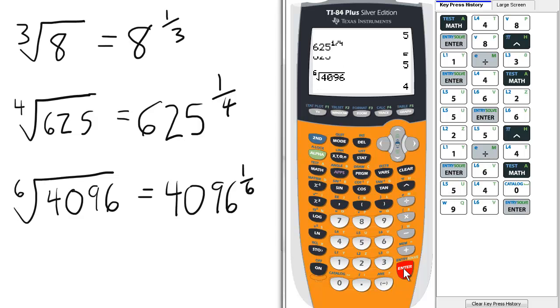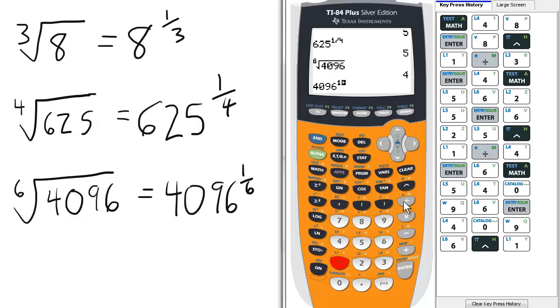Or using far fewer keystrokes, 4096 raised to the 1 divided by 6. So the 6th root of 4096 can also be rendered as 4096 to the 1 6th power.